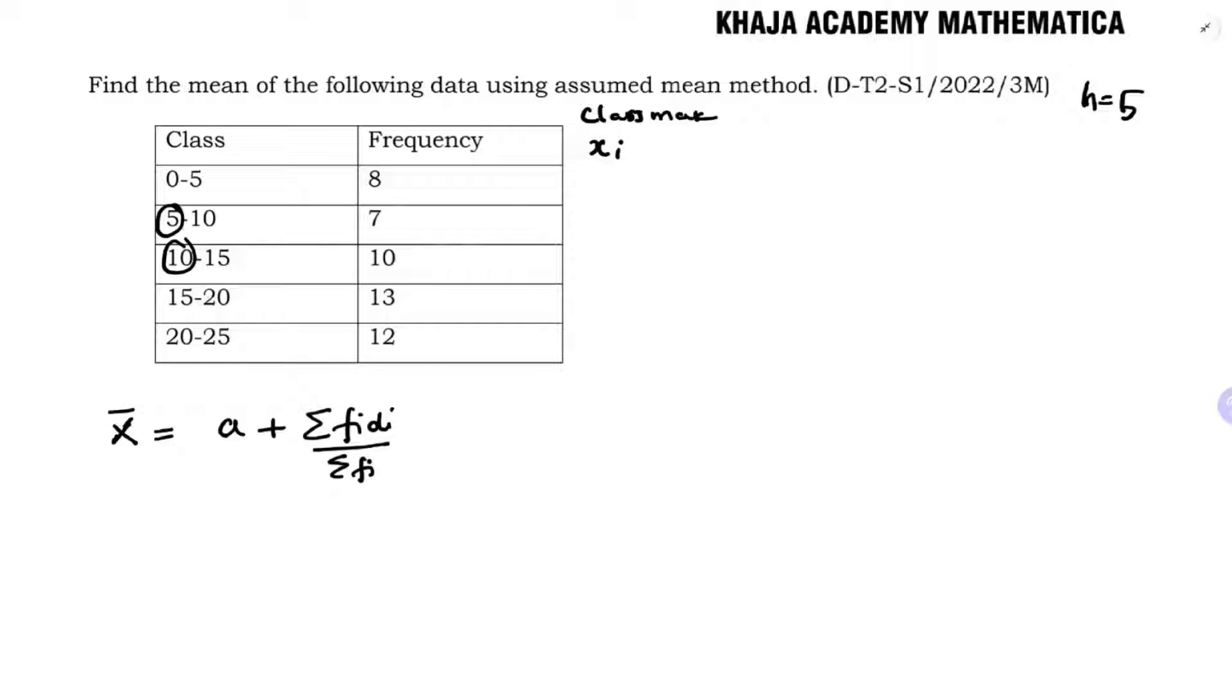Because 10 minus 5 is 5, and 15 minus 10 is 5, so h is 5. Now class mark is 0 plus 5, which is 5, divided by 2 equals 2.5. Next, 5 plus 10 is 15, divided by 2 is 7.5.